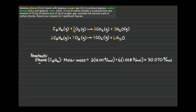Now we'll repeat this process for oxygen gas. The molar mass of O2 is 2 × 15.999 g/mol, which gives us 31.998 g/mol. Once we have both molar masses in hand, solving for the limiting reactant is relatively straightforward.